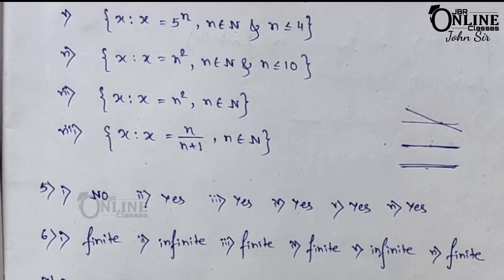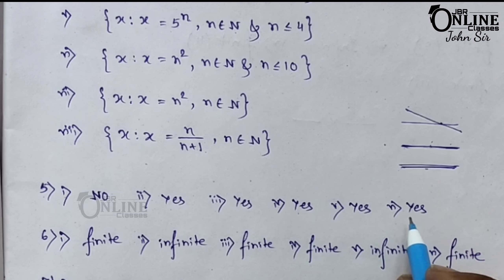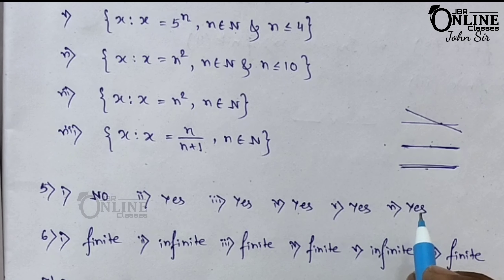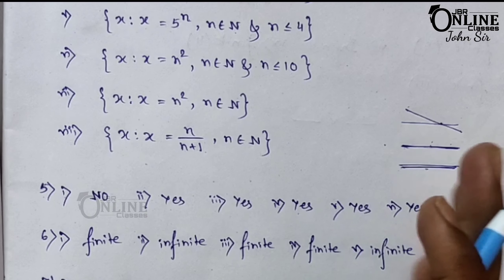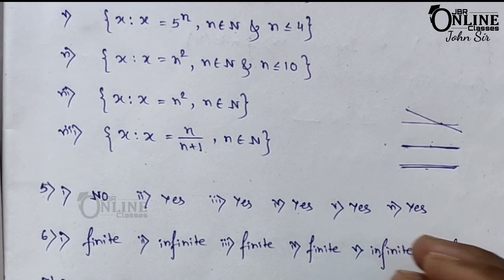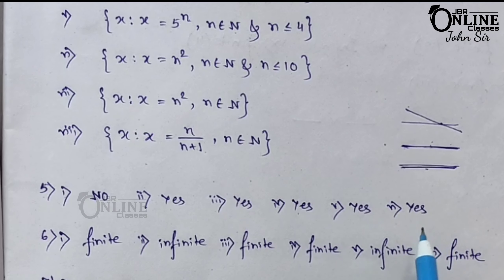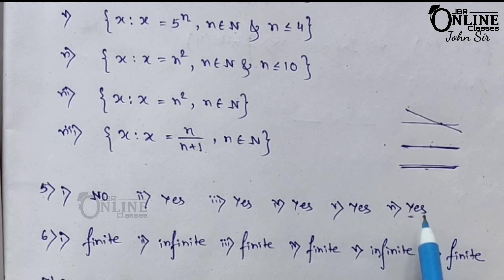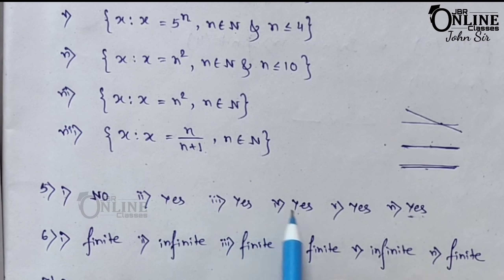Sum number 6 (last): x such that x is a student of your school presently studying in both class 11 and 12. This is also impossible — a student cannot be in both class 11 and 12 at the same time. So the answer is null set. Only the first one — even prime numbers — was not a null set; all the others are null sets.